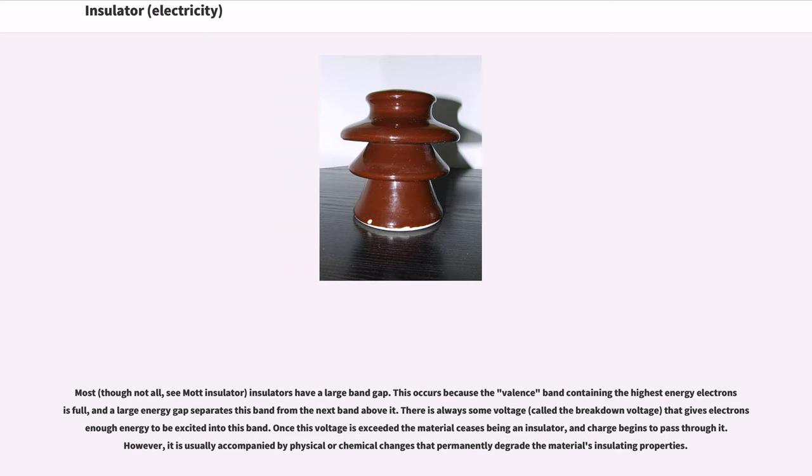There is always some voltage, called the breakdown voltage, that gives electrons enough energy to be excited into this band. Once this voltage is exceeded, the material ceases being an insulator, and charge begins to pass through it. However, it is usually accompanied by physical or chemical changes that permanently degrade the material's insulating properties.